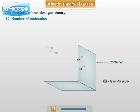Number 10. Though the gas molecules are in random motion, the total number of gas molecules per unit volume of the gas remains same. Hence, even though the molecules are moving randomly, they cannot be collected at one end or in one part of the container.